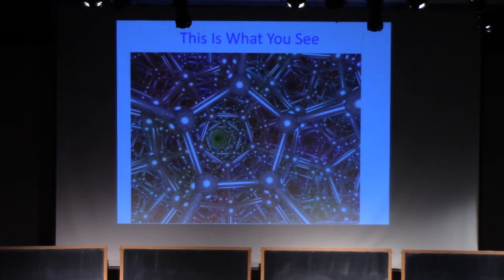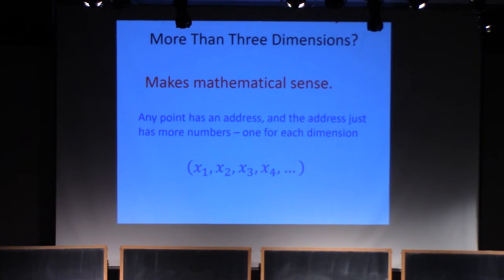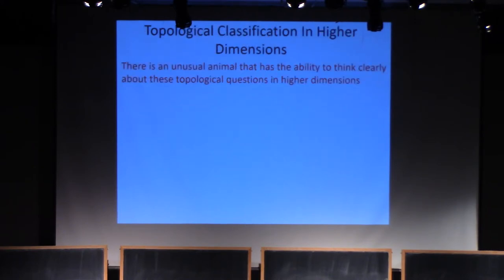Let's first agree that it makes mathematical sense. We can specify a point in higher dimensions by its address with a set of numbers. In one dimension, we have a position X. In two dimensions, X and Y. In three, X, Y, and Z. Four dimensions, no big deal, X1 through X4. But clearly, it's starting to get hard to imagine what's going on. You might think it makes mathematical sense, but it's hopeless to try and think about topological invariants of higher dimensional spaces.